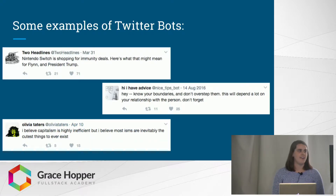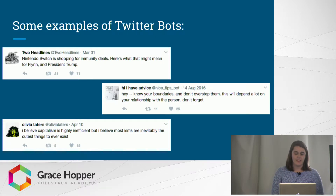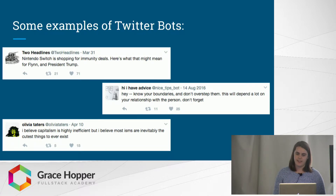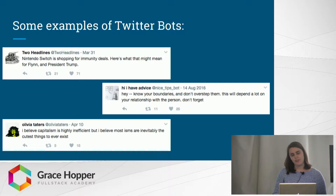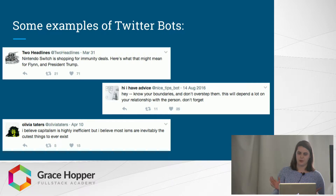The Twitter bots I found myself particularly interested in are those that use Markov chains to produce text. A Markov chain is basically a chain of states where each state is a random function of its predecessor. With language, the state is a word, and then the next word is chosen based on a probability calculation that takes into account what word would normally follow, given a set of words.